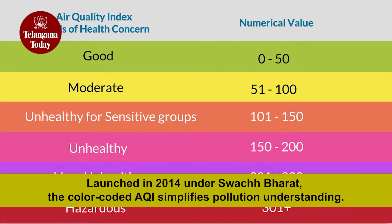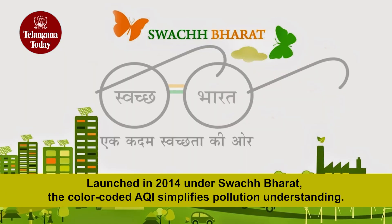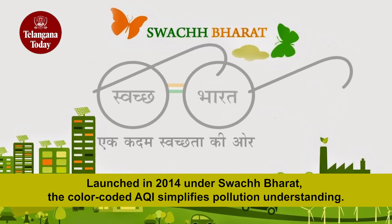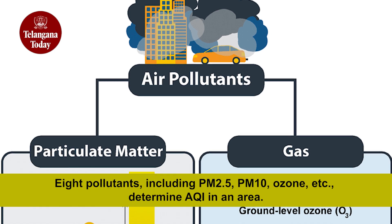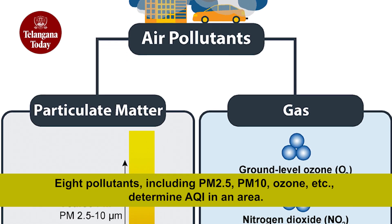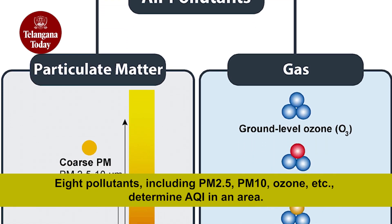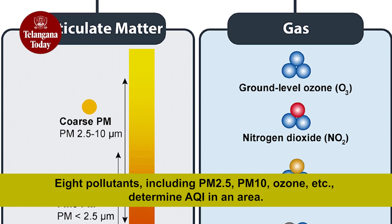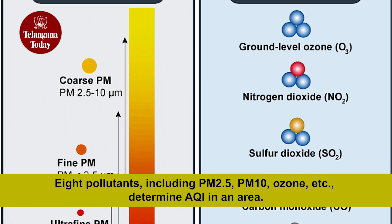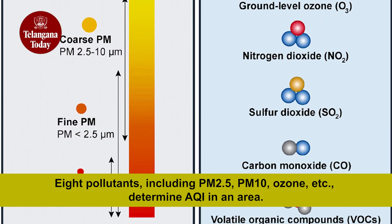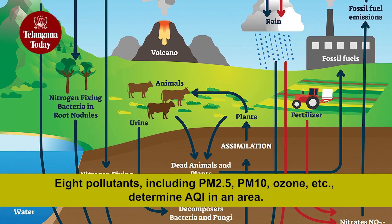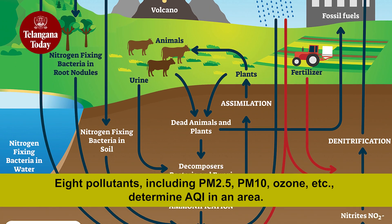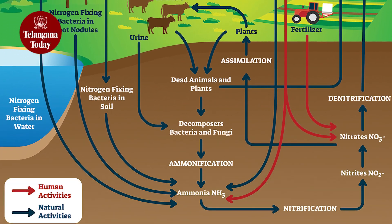Launched by the central government in 2014 as part of the Swachh Bharat campaign, the color-coded AQI helps simplify the common understanding of pollution. Eight pollutants — namely particulate matter PM 2.5 and PM 10, ozone, carbon monoxide, nitrogen dioxide, sulfur dioxide, lead, and ammonia — act as major parameters in deriving the AQI of an area.